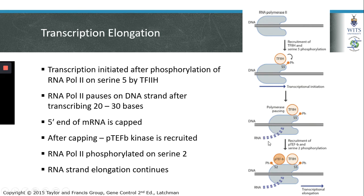It is during this pause that the RNA is capped, and we'll discuss the process of 5' capping in detail in the next few slides. After the RNA is capped, PTEFB, which is another kinase, is recruited to the RNA polymerase. PTEFB is responsible for phosphorylating the RNA polymerase on serine 2, after which the RNA polymerase can continue with the process of elongation and move along the DNA strand to transcribe the mRNA.